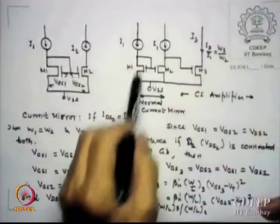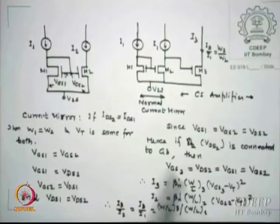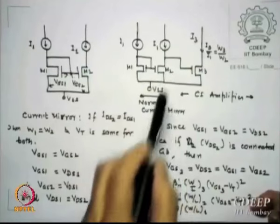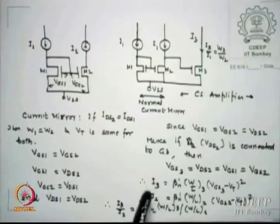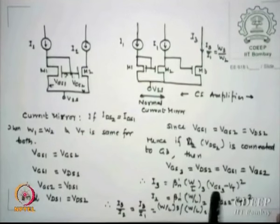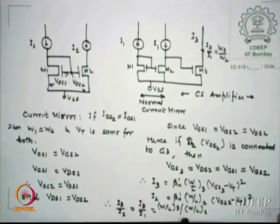In this normal current mirror, the transistors are identical. VGS1 = VGS2, which also equals VDS2, and VDS2 is nothing but VGS3. Since I3 = β'(W/L)3·(VGS3−VT)² and I2 = β(W/L)·(VGS2−VT)², if these are equal then I3/I2 = (W/L)3/(W/L). This is a standard method of biasing a common source amplifier from the mirror.